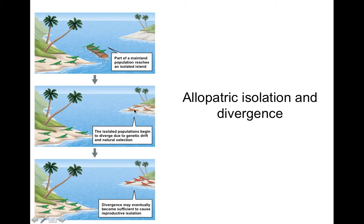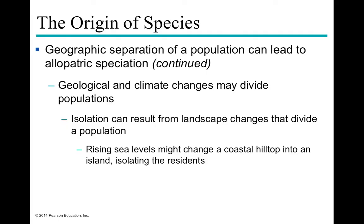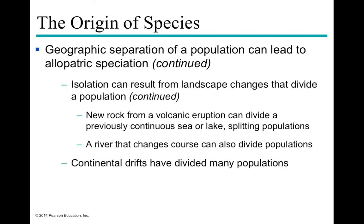In allopatric speciation, a founder effect may be involved — for example, lizards leave island A, travel on a log to island B, which has different environmental and selective pressures. Over time the island B lizards become more brown while the island A lizards stay green. The divergence eventually reaches the point of reproductive isolation, which is the definition of speciation. Physical barriers can be geological — rising sea levels creating two islands from one hilltop population, a river changing course, volcanic eruptions, or continental drift.